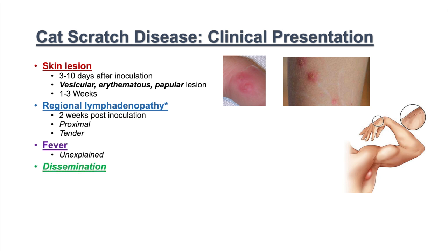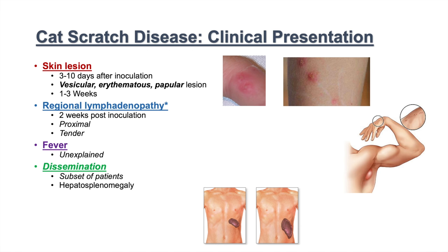Other than these three most common signs and symptoms, there are certain instances where individuals can have disseminated cat scratch disease. It's unclear why this happens, but a subset of patients can develop dissemination leading to hepatosplenomegaly — enlargement of the spleen and liver — retinitis, inflammation of the retina, and even encephalopathy. This occurs in rare instances but can be a result of dissemination of the illness.